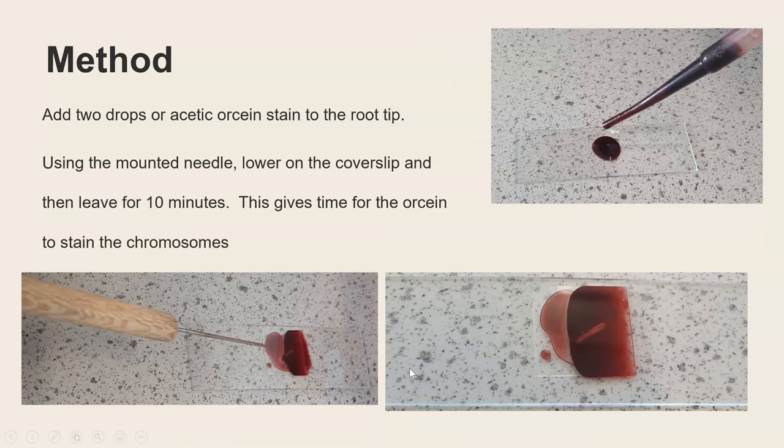Now we're ready to stain our root tip and you add just two small drops of acetic orcine. If you have too much then again you can add some filter paper next to it and it'll absorb the excess stain because you don't want so much that it'll then spill over the edges. You then use your mounted needle to carefully lower down that glass cover slip so that you'll end up with no air bubbles.